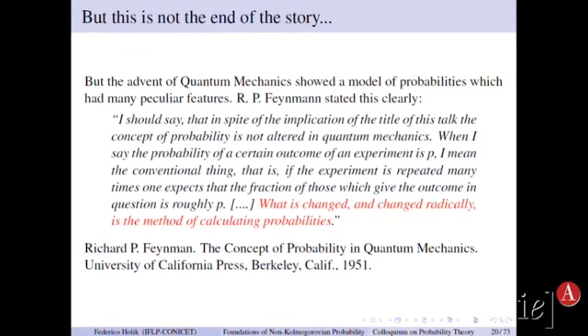So let us quote Richard Feynman, which is one of the most famous physicists of the 20th century. He says, I should say that in spite of the implementation of the title of this talk, the concept of probability is not altered in quantum mechanics. When I say that the probability of a certain outcome of an experiment is p, I mean the conventional thing. That is, if the experiment is repeated many times, one expects that the fraction of those which give the outcome in question is roughly p.